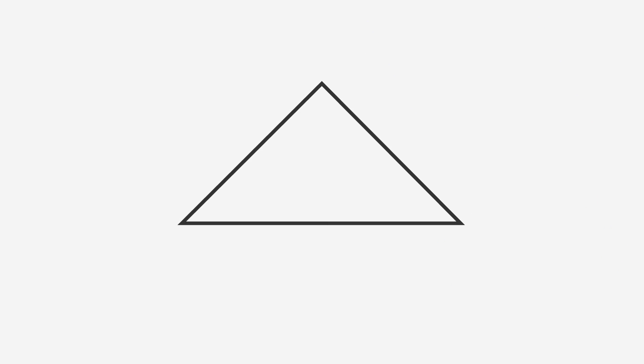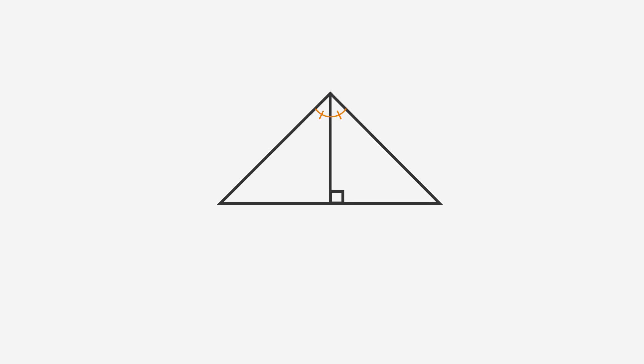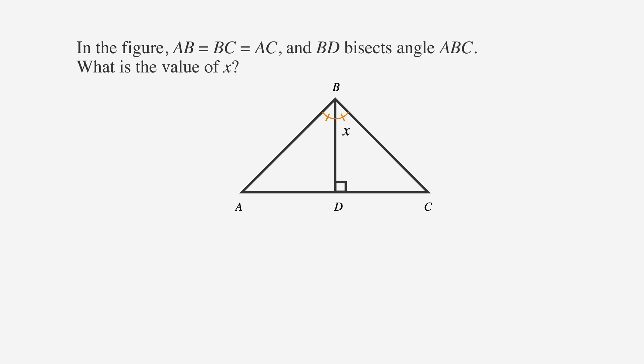Bisected angles are angles that are cut equally in half. Let's look at this problem about bisected angles. In the figure, AB equals BC equals AC, and BD bisects angle ABC. What is the value of X?